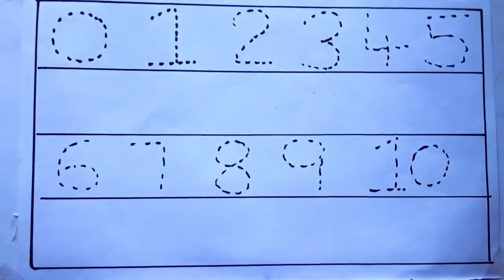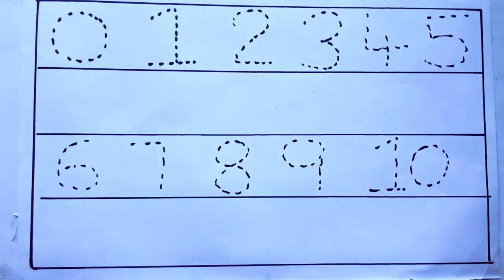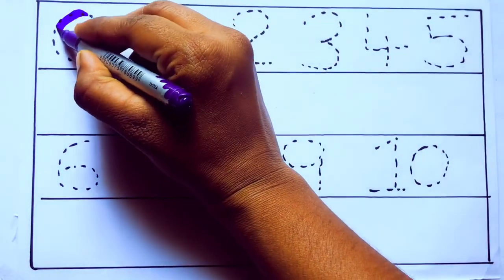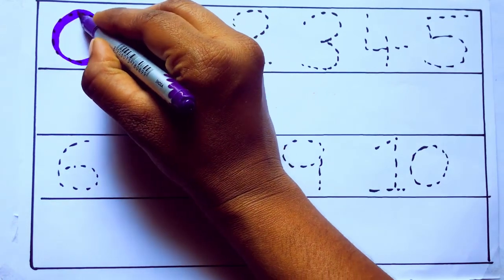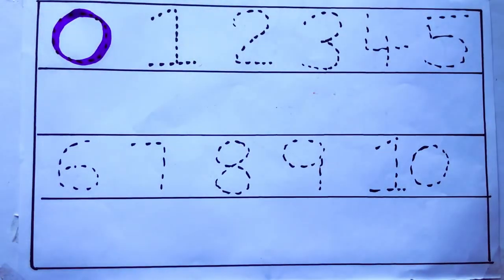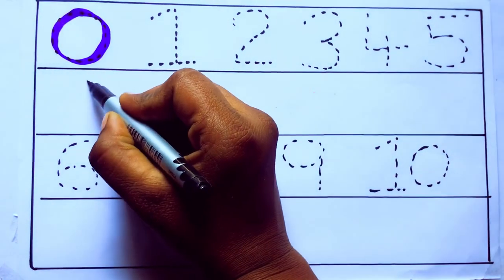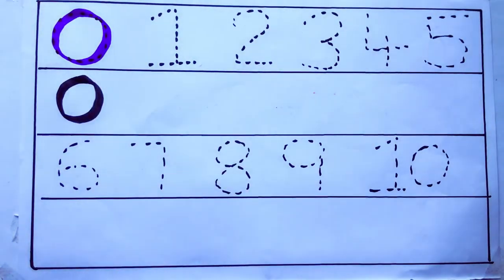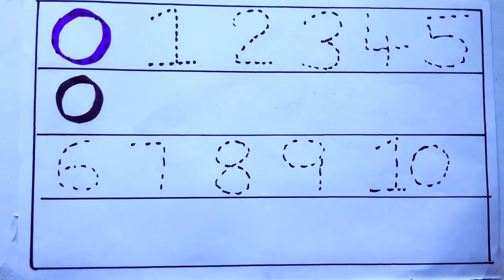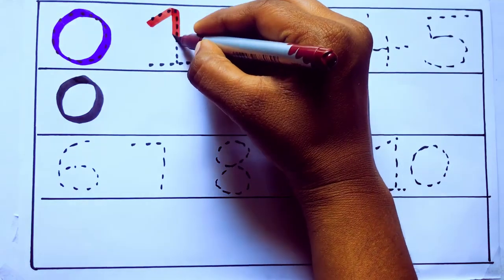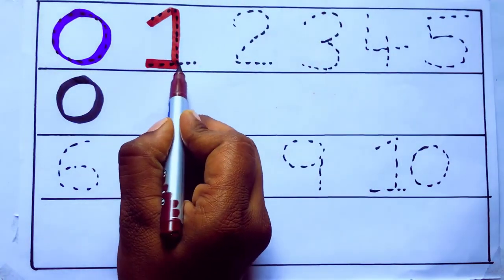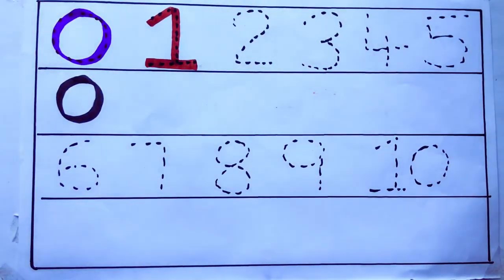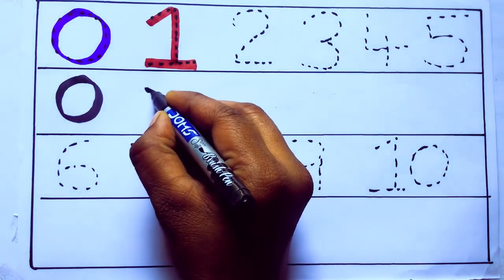Let's draw numbers. Violet color 0, Z-E-R-O, 0. Brown color 1, O-N-E, 1.